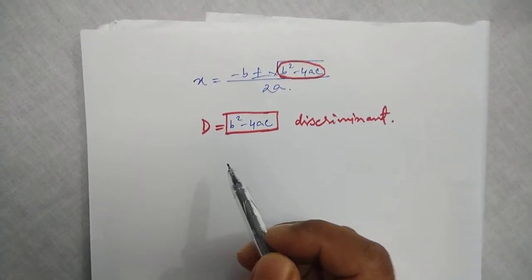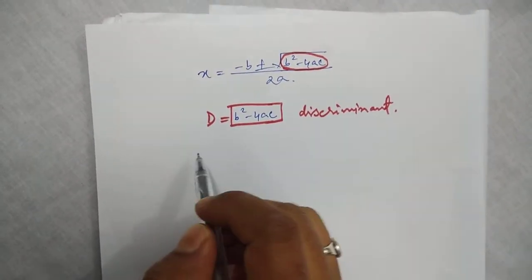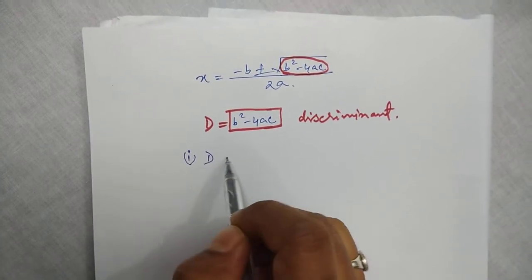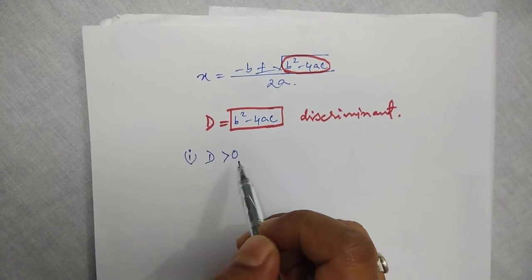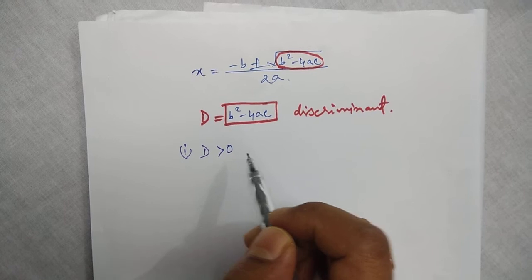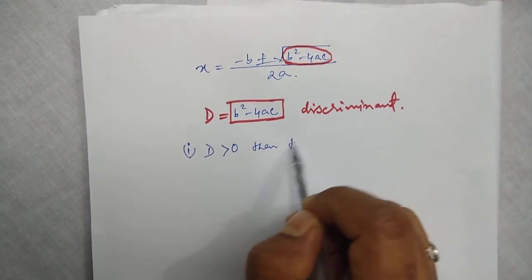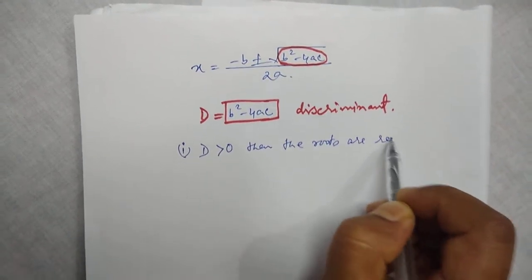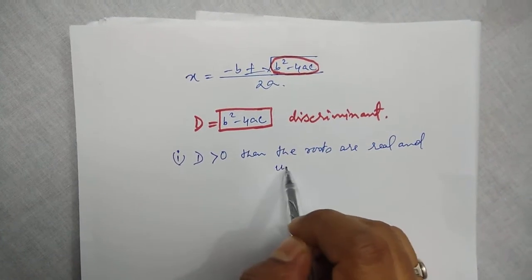Nature of the roots means, when we find b square minus 4ac and if we get D as positive, that means strictly greater than 0, then we can tell that the roots are real and unequal.